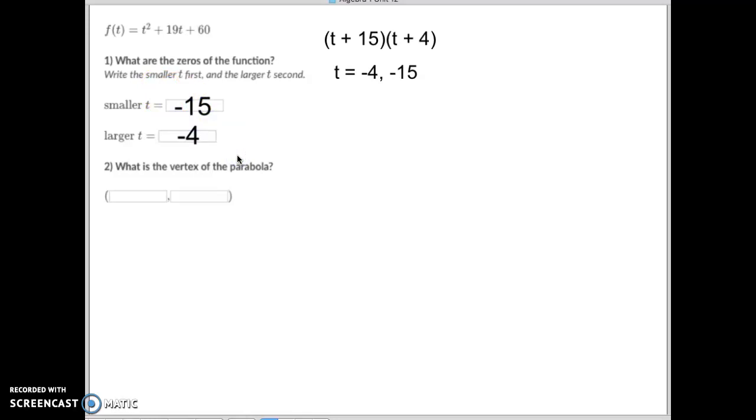I now very quickly found my smaller value of negative 15 and my larger value of negative 4. Now there's two ways to get the vertex. Okay the easy way in my opinion is simply what is the midway point between negative 15 and 4? And if it's kind of hard to think about that just do this.